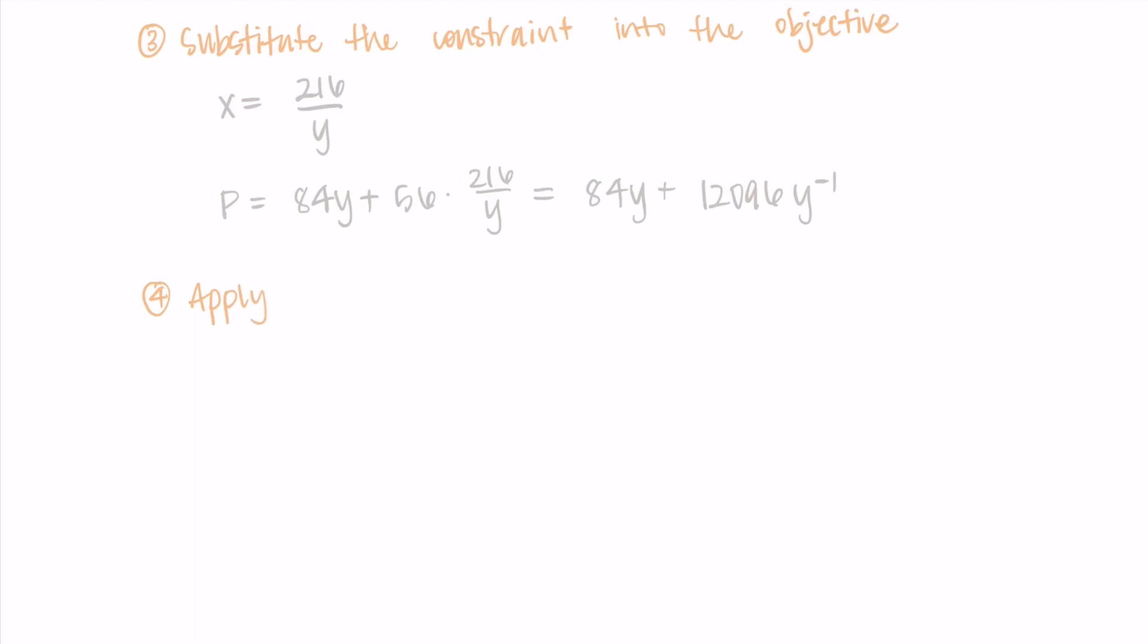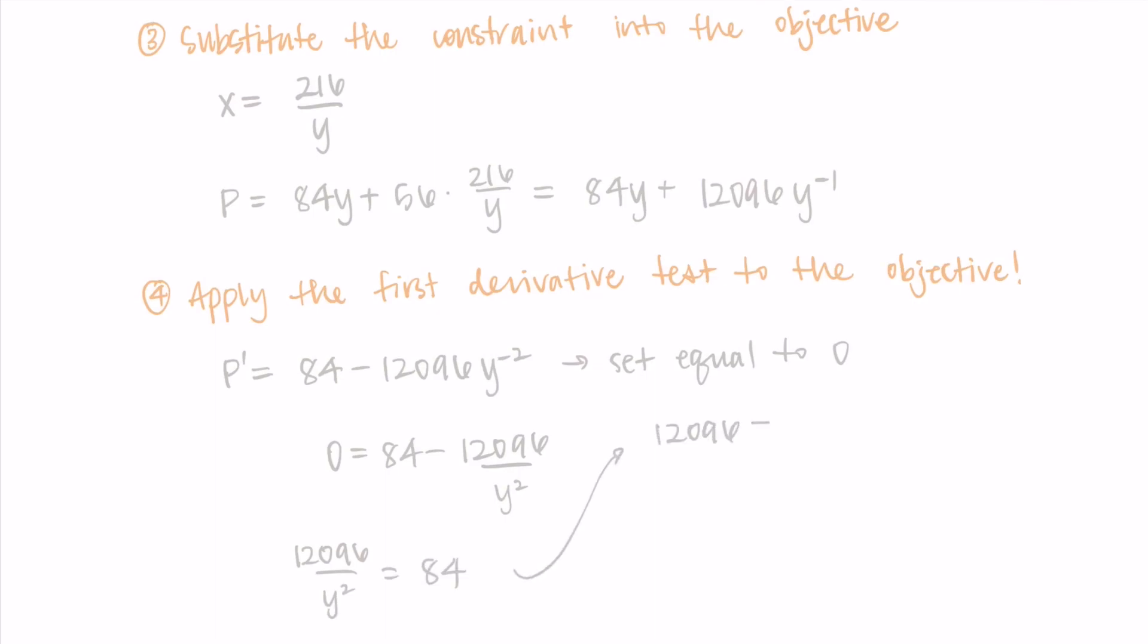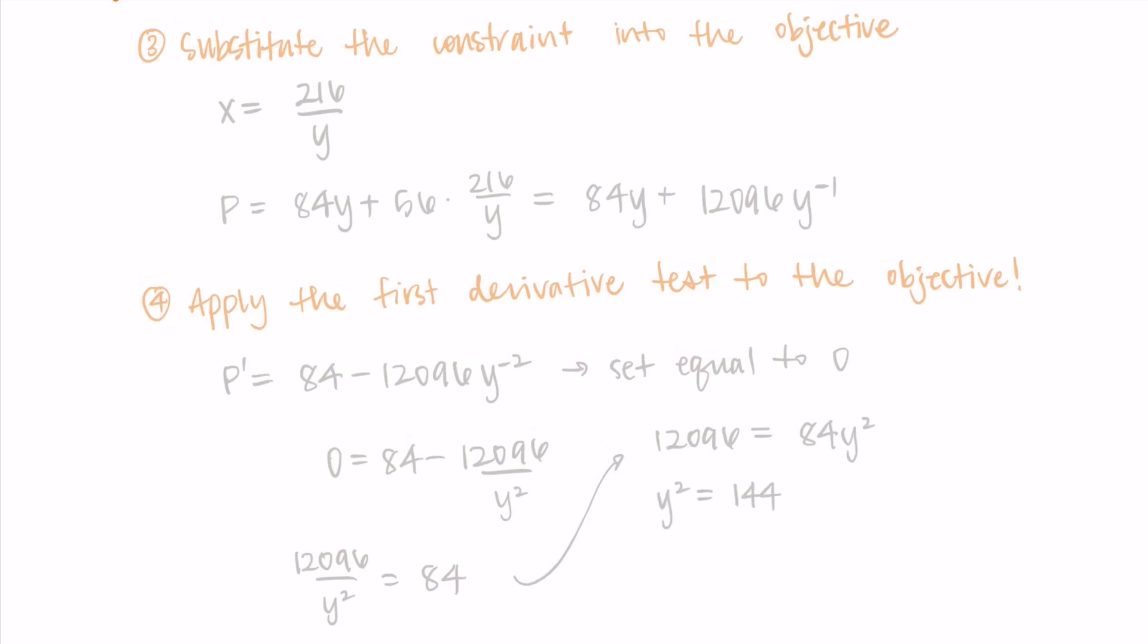Now we just need to apply the first derivative test to this objective equation that we have. So to do the derivative of p, I just need to use power rule. Derivative of 84y is 84. And on the second term, the negative one comes in front, and the exponent decreases to negative two. Remember, we're going to now set this equal to zero since we're trying to find the critical numbers. So I'm going to rewrite the negative exponent as a positive exponent in the denominator. And to get y by itself, let's move the 12,096 over y squared to the left hand side. I'll multiply both sides by y squared. Then dividing both sides by 84, I'm getting that y squared is equal to 144.